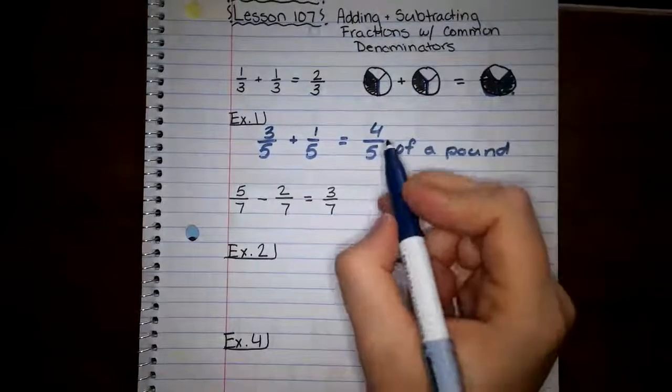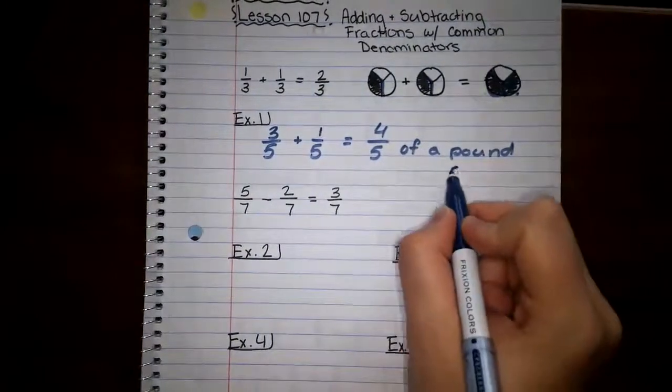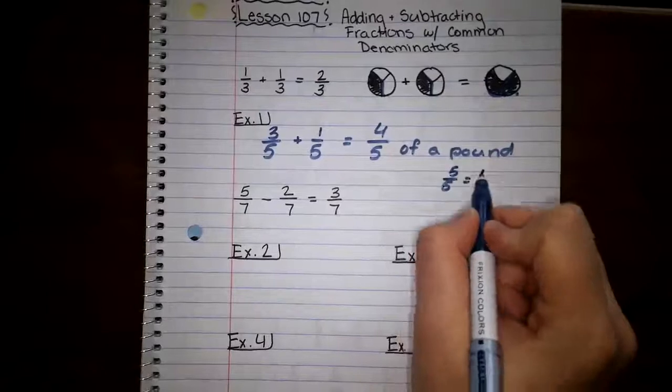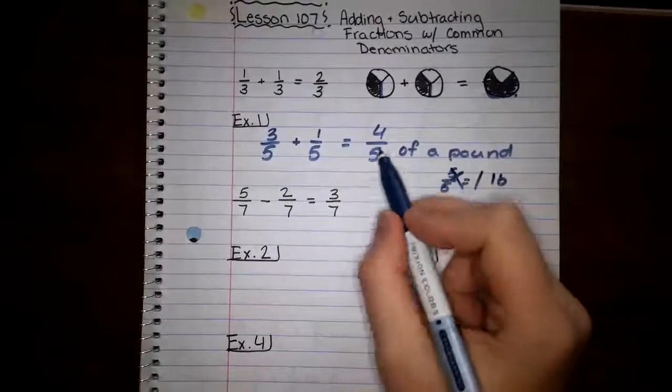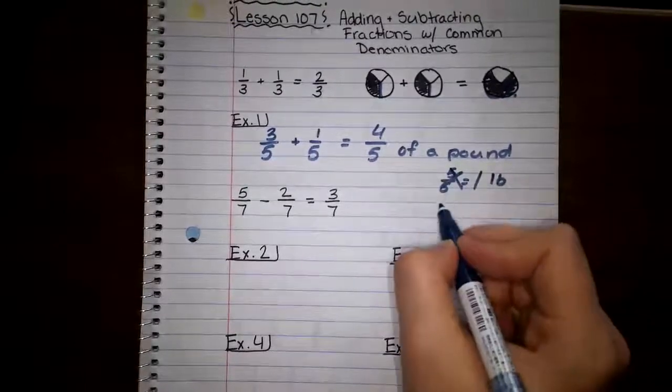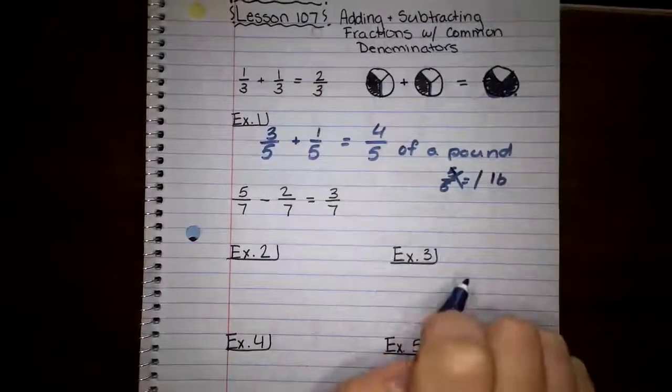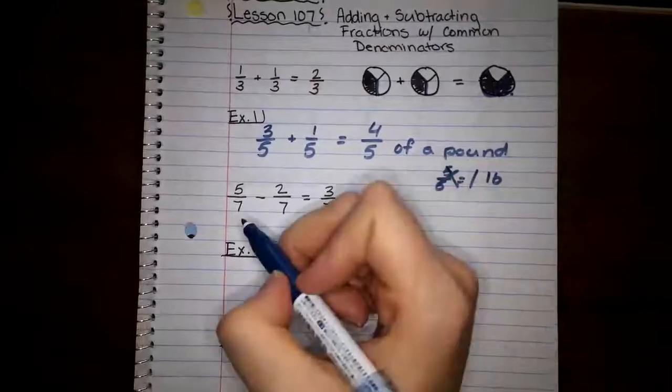So just a side note, remember that if we did end up having five over five, that is equal to one, we would have one pound. But we don't. We only have four fifths of a pound. But that five over five is equal to one whole pound. One whole circle.